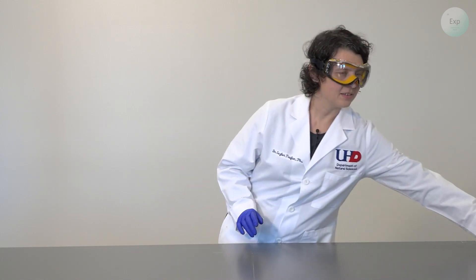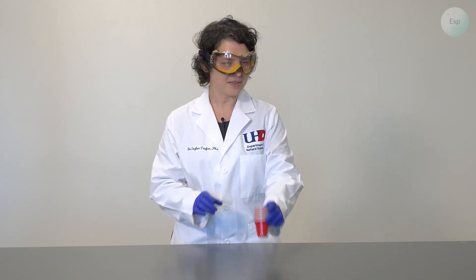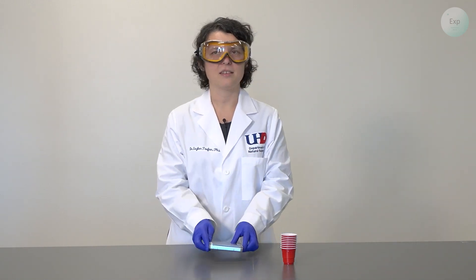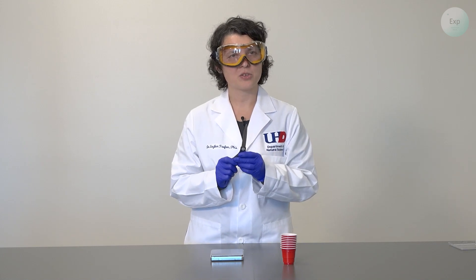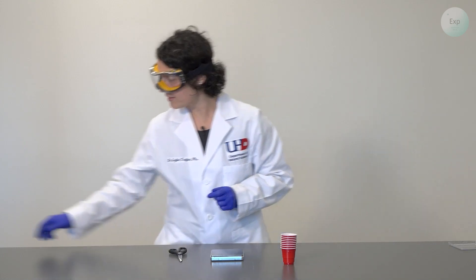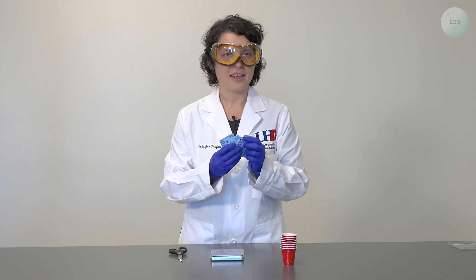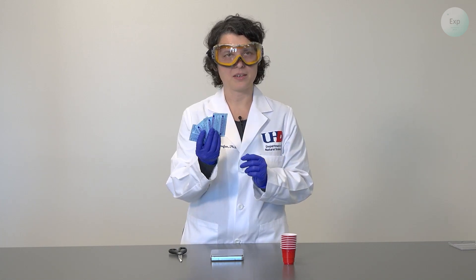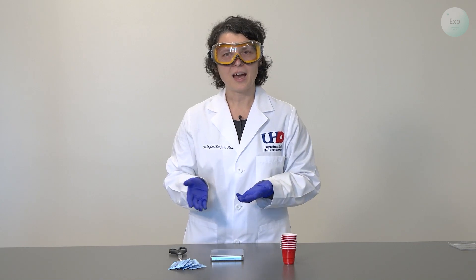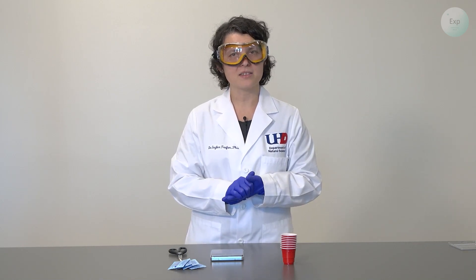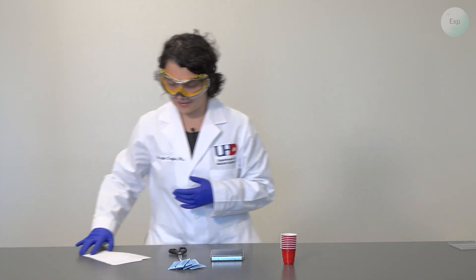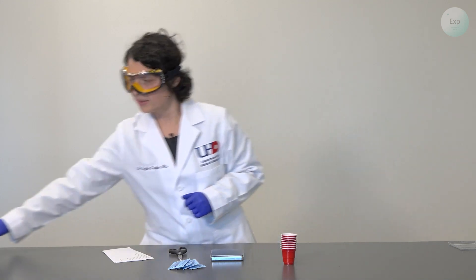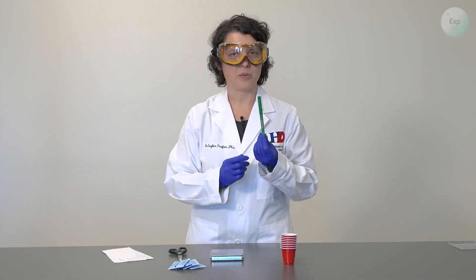For this experiment we're going to need eight little cups, a scale, scissors to open the Alka-Seltzer pouches, eight Alka-Seltzer tablets from four packets of two, pre-prepared sheets of paper to record masses for each experiment and tablet, and a pen.